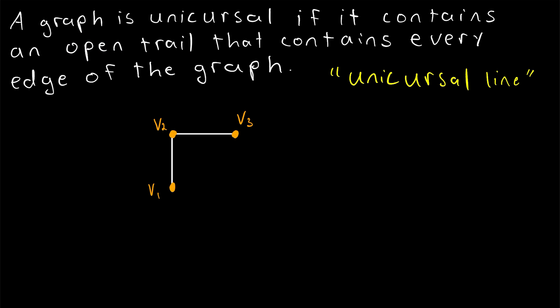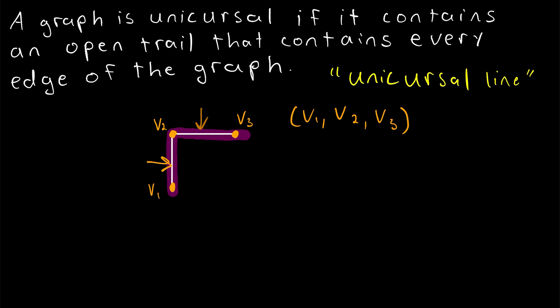Before we get too ahead of ourselves, let's quickly take a look at an example of a unicursal line. This graph is a unicursal graph because it contains a unicursal line. Going from the vertex v1 to the vertex v2 to the vertex v3 — this is an open trail. It starts and ends at distinct vertices and contains every edge of the graph. So that is a unicursal line, thus this is a unicursal graph.